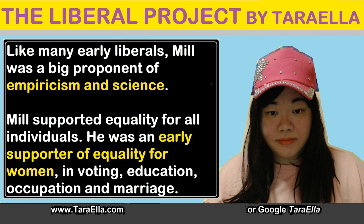Like many early liberals, Mill was a big proponent of empiricism and science. He believed that knowledge can only come about by empirical observation and reasoning. Using his logical reasoning, he came to the conclusion that the promotion of happiness is the proper test to judge all human conduct as morally good or bad, and therefore the principle of utility or utilitarian efficiency was his core moral principle. Under this view, an act should be wrong simply if it would be overall more utilitarian to punish an individual for the act. Some have argued that this could lead to moral relativism — that is, a morality that varies by culture.